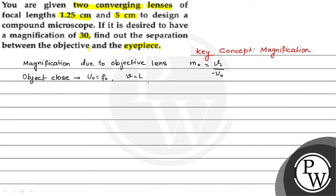And this is the focal length of the objective lens and V is equal to L. L is the distance between the objective lens and the eyepiece. This is the tube length. M0 will be equal to L by F0.